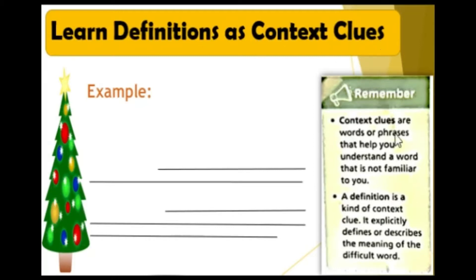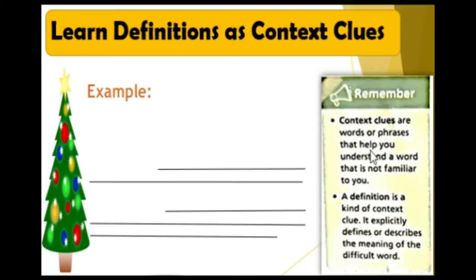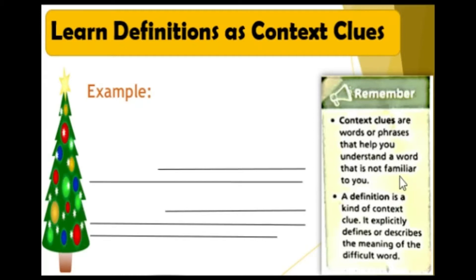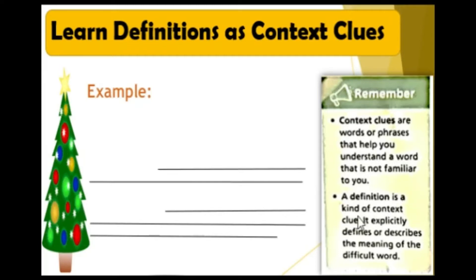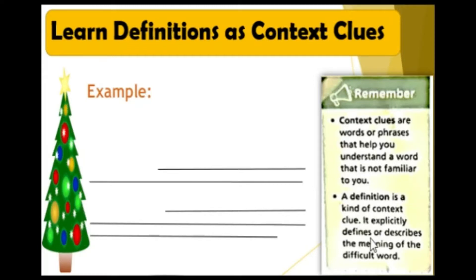We will be learning about definitions and context clues. Context clues are the words or phrases that help you understand a word that is not familiar to you. When we say definition, it is a kind of context clue — it explicitly defines or describes the meaning of the difficult word.